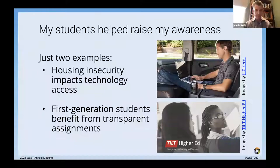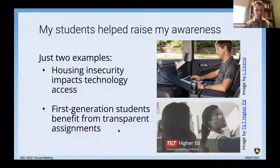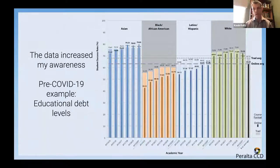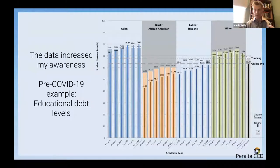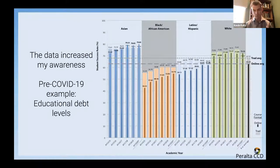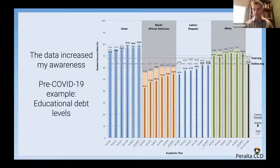That student in a housing insecurity situation — which many of our students face at some point in their college career — had their ability to access technology impacted. We need to be aware of these things. I also had a first-generation student tell me he benefited from my use of an assignment template, calling back to Dr. Henry's discussion of transparency. Because I consult with colleges and universities, I've been working with a community college district in Oakland, California, where state statistics show student success rates disaggregated by ethnicity, first-generation status, and low socioeconomic status reveal disparities — education debt gaps.